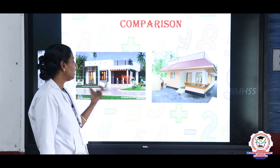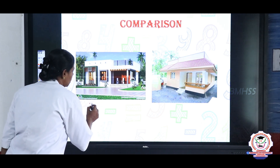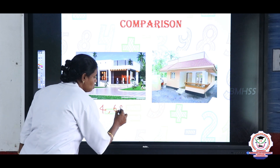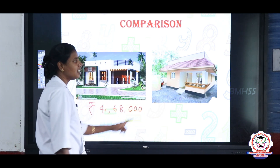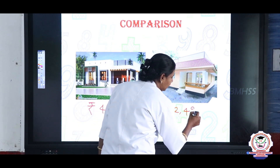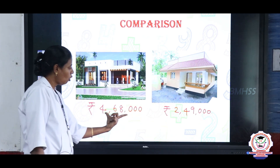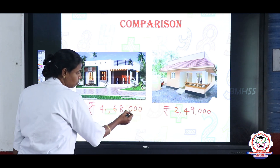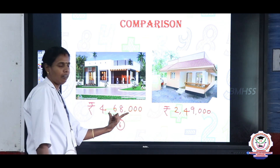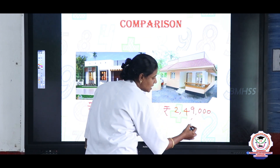One more example with larger numbers — the values of two houses. The cost of the first house is rupees 4,68,000 and the cost of the second house is rupees 2,49,000. How do we compare both values? We count the digits: both numbers have 6 digits each.